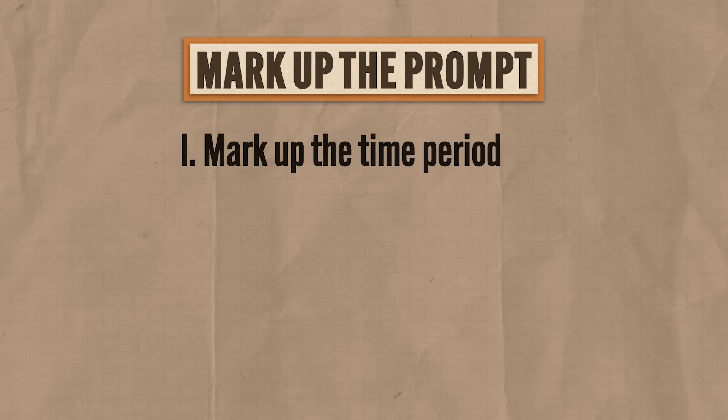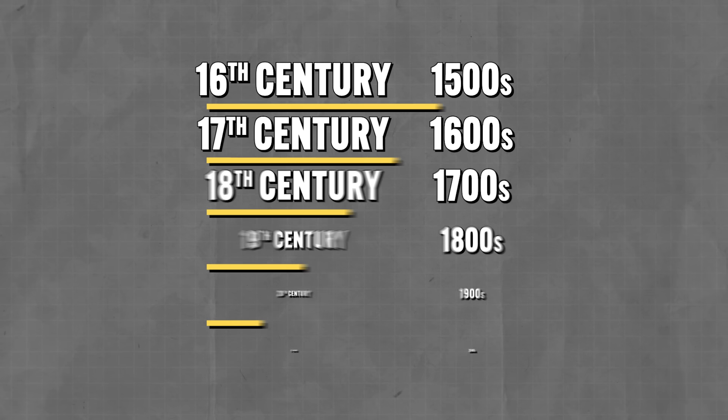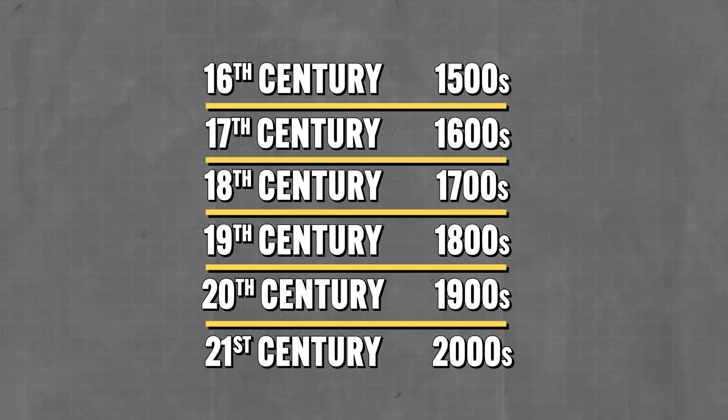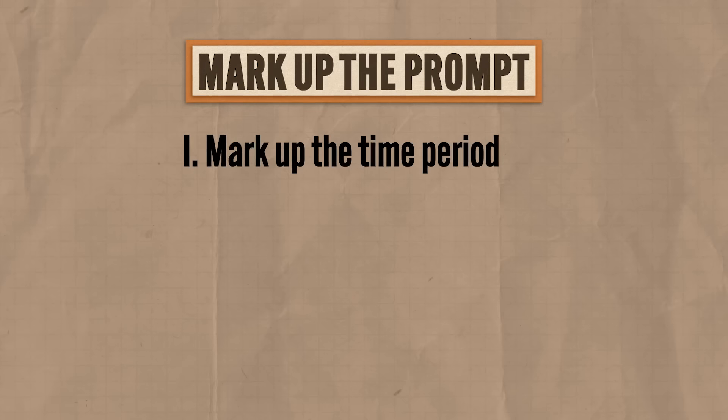The first thing you need to do is mark what time period they're asking you to write about. If they ask you to write about immigration in the second half of the 19th century and you write about the first half, you burn. I'd always advise you to write the actual numbers if they give you centuries — if they want the 16th century, write out 1500s. When you are under pressure, you are dumber than you think, so make sure you get those dates correct.